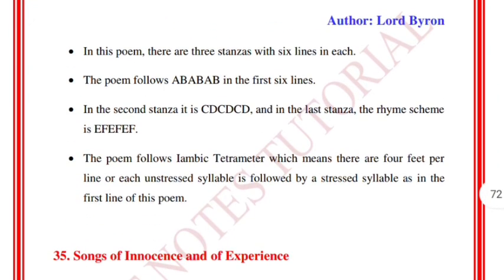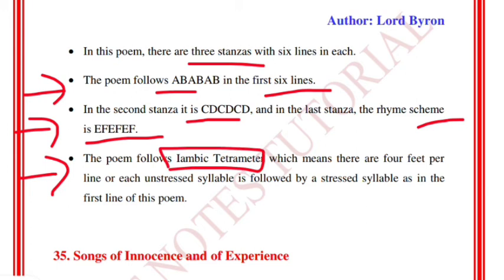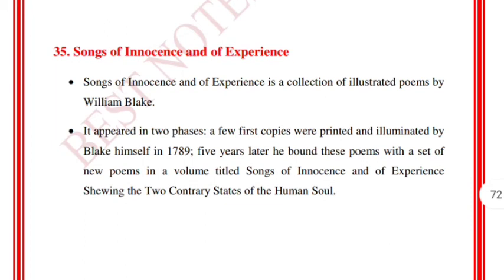In this poem there are three stanzas with six lines each. The poem follows the rhyme scheme ABABAB in the first stanza, CDCDCD in the second stanza, and EFEFEF in the last stanza. The poem follows iambic tetrameter, which means there are four feet per line, and each unstressed syllable is followed by a stressed syllable.